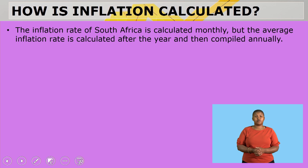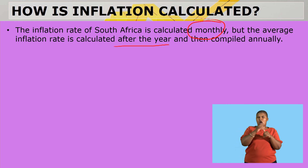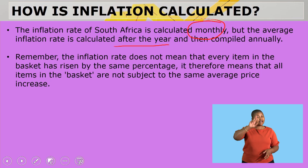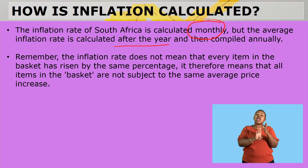How is inflation calculated? The inflation rate of South Africa is calculated monthly, but an average inflation rate is calculated after a year and then compiled annually. They will have a basket of goods and through the year they will take the prices each month and calculate the inflation, and at the end of the year compile it and calculate an average. It needs to be the exact same goods at the exact same shops — only the prices will differ. Remember, the inflation rate does not mean that every item in the basket has risen by the same percentage.